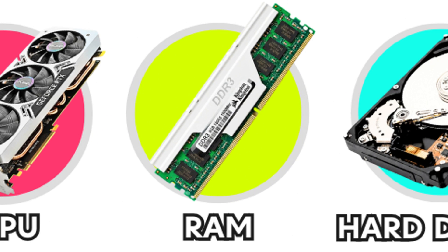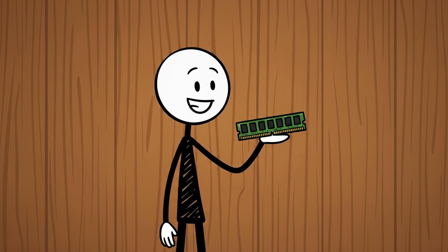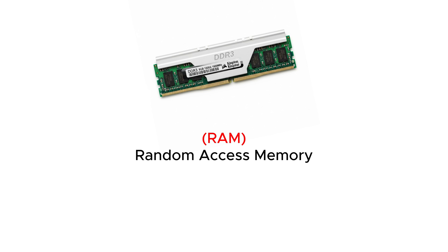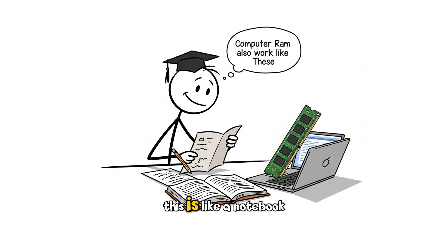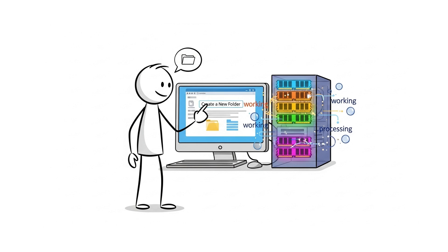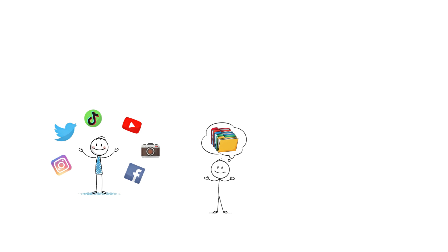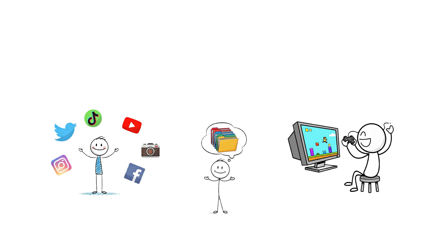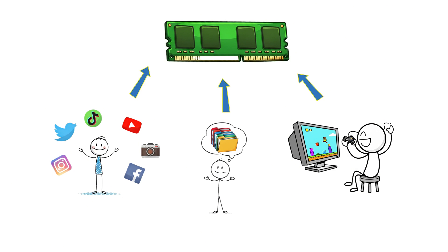Next, we have RAM, which means Random Access Memory. This is like a notebook you keep on your table while studying — you only write things on it that you need right now. When you open apps, files, or games, they run inside the RAM.